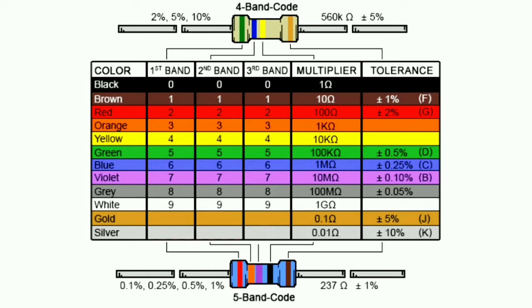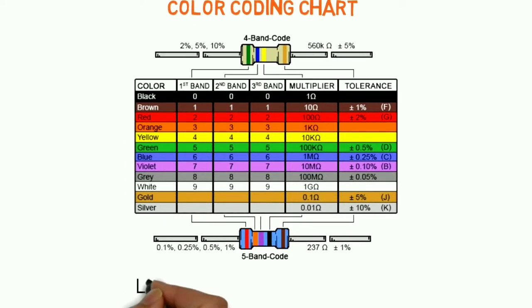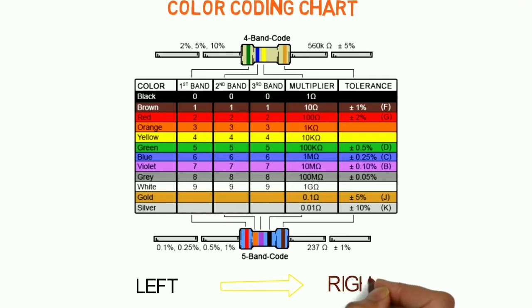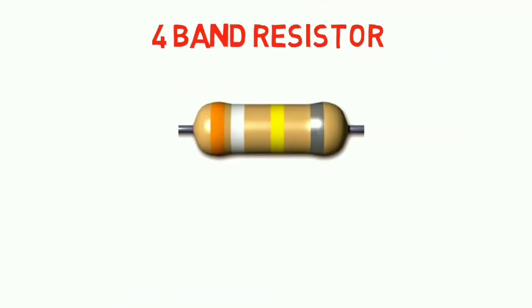Each color corresponds to a specific digit. To read the resistance value, we go from left to right. We use the 1st color as the first digit and the 2nd color as the second digit. These two digits form the significant figures of the resistance value. You can use the same color band method for both 4-band and 5-band resistors.